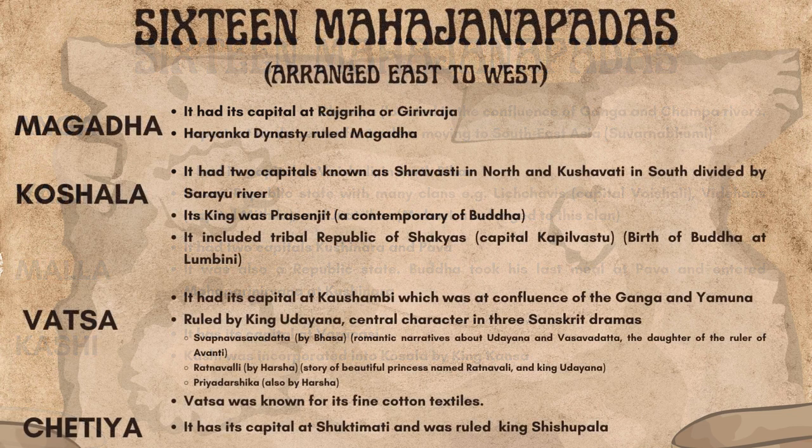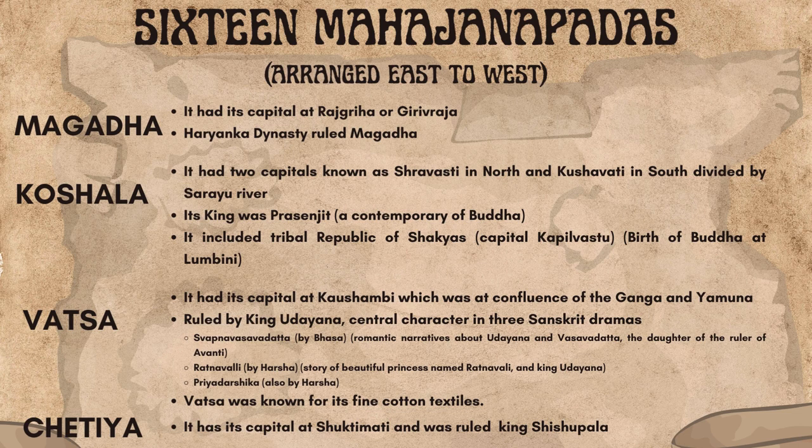The Kingdom of Magadha had its capital at Rajagriha, also known as Girivaraja, and the Haryanka dynasty ruled Magadha. The Kingdom of Koshala had two capitals — Shravasti in the north and Kushavati in the south — divided by the Sarayu River. Its king, Prasenjit, was a contemporary of Buddha.